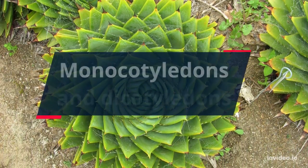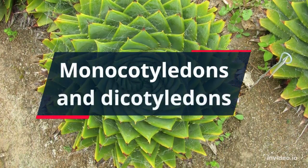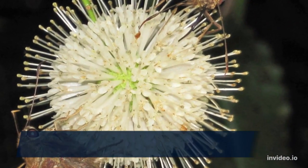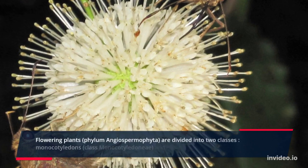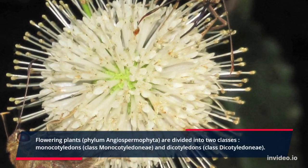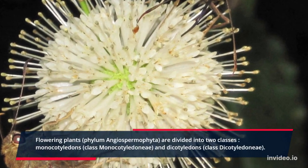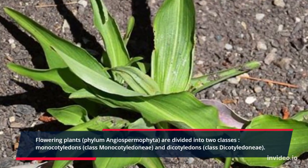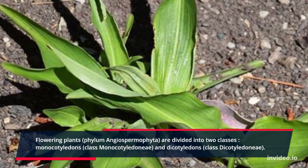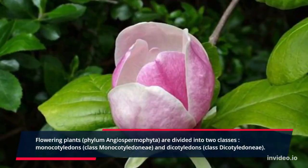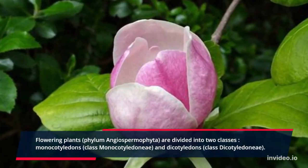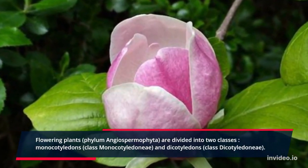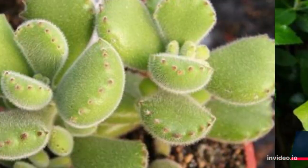Monocotyledons and Dicotyledons. Flowering plants are divided into two classes: Monocotyledons, class Monocotyledon A, and Dicotyledons, class Dicotyledon A.